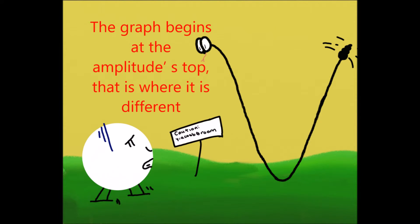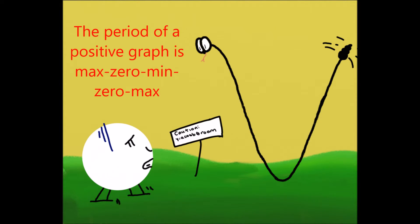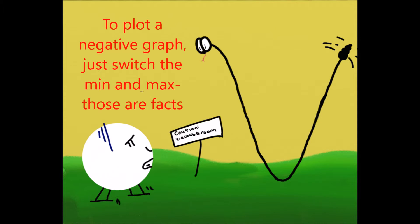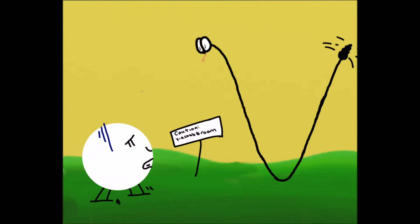The period of a positive graph is max 0, min 0, max. To plot a negative graph, just switch the min and the max, those are the facts. Don't fall asleep, we know this is a bore. But just hold on, there's only one graph more.